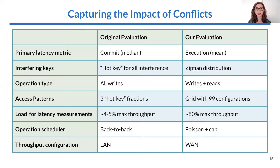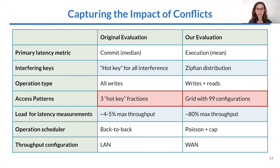This table shows the changes we made to the original EPaxos benchmarking setup. The original evaluation used a single hot key in a key-value store for interference, issuing all operations on unique keys except for a fixed percentage. For our experiments, we used a Zipfian distribution to determine the keys on which operations were issued. Furthermore, the original evaluation used three hot key fractions — 0%, 2%, or 100% of operations on that particular key — whereas we ran experiments with 99 different access patterns to represent the range of practical applications. Lastly, we captured latency measurements with the system at about 80% throughput, since low load minimizes opportunities for operation interference.